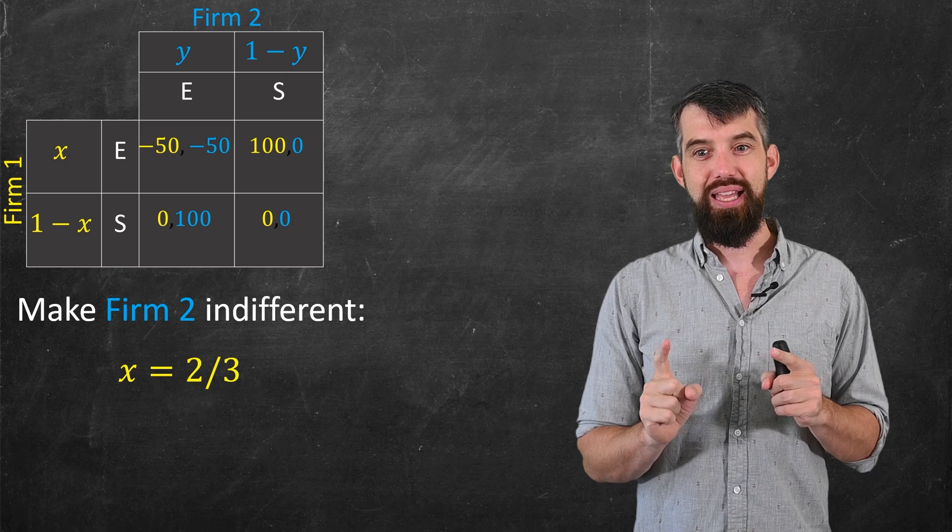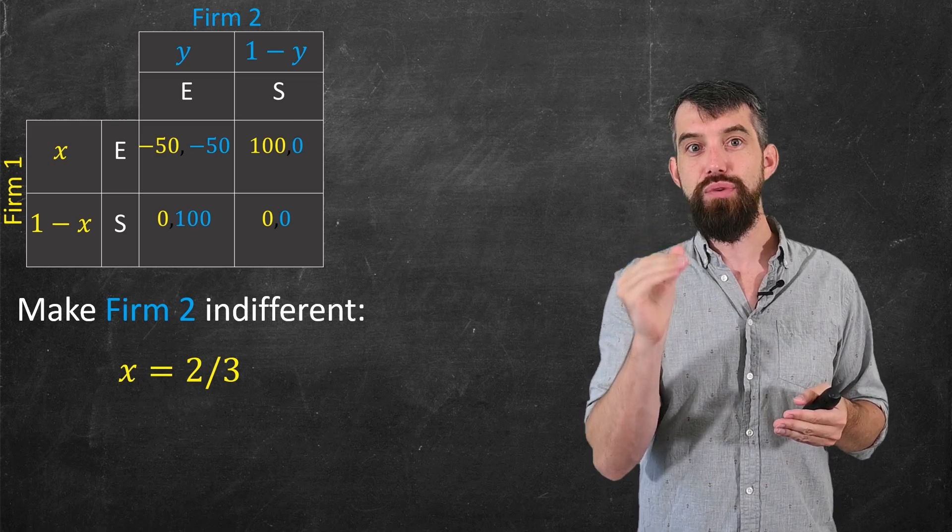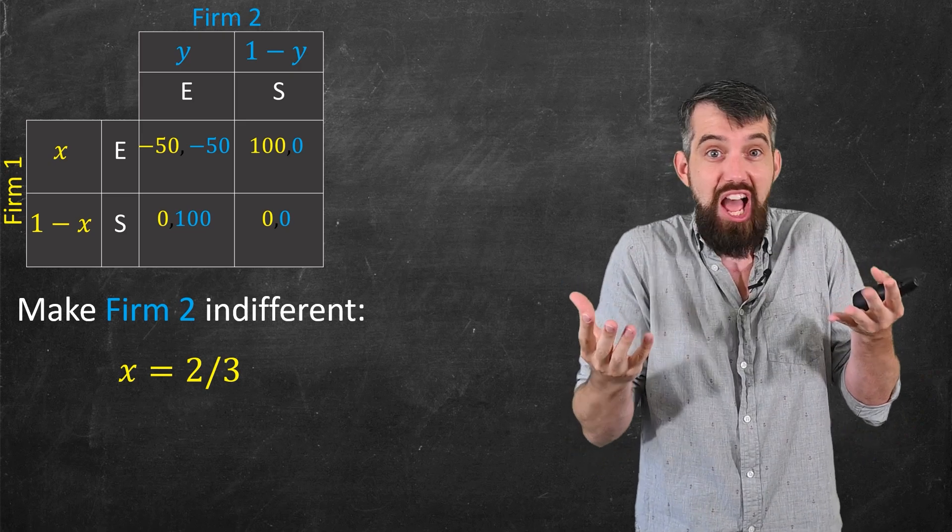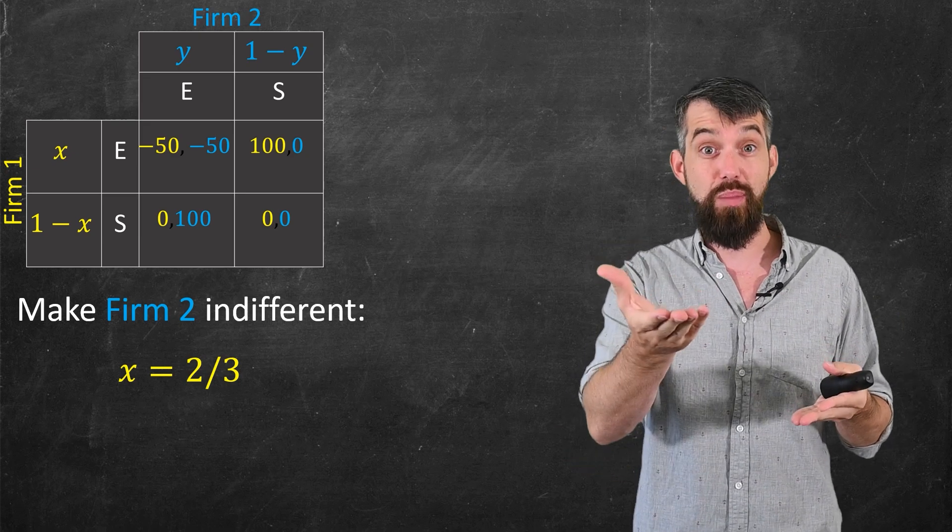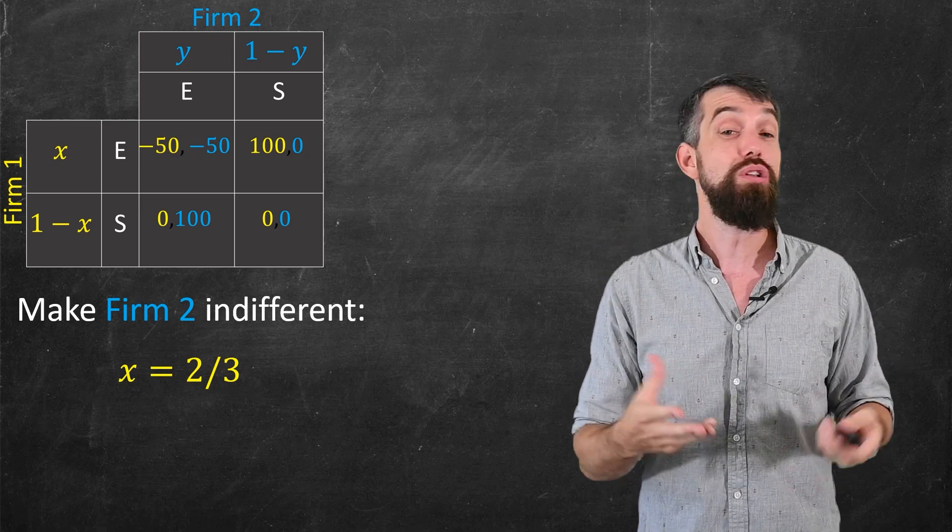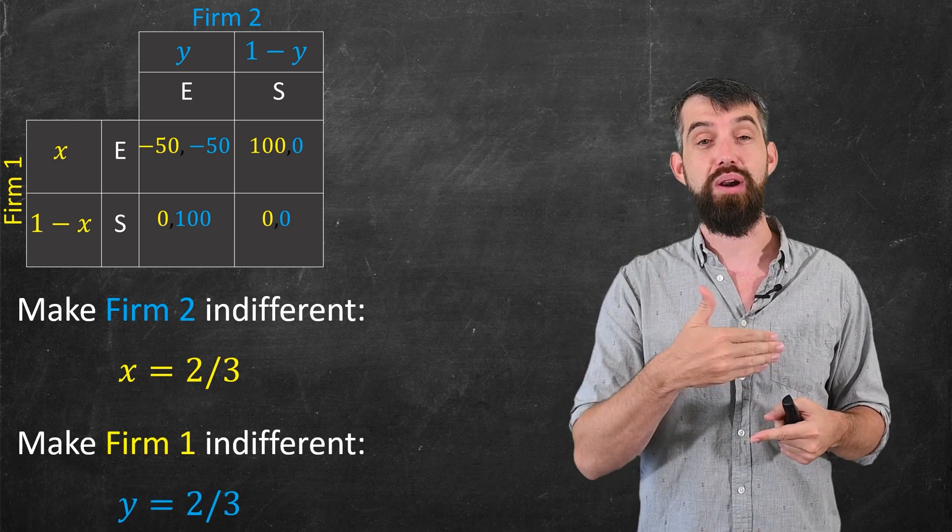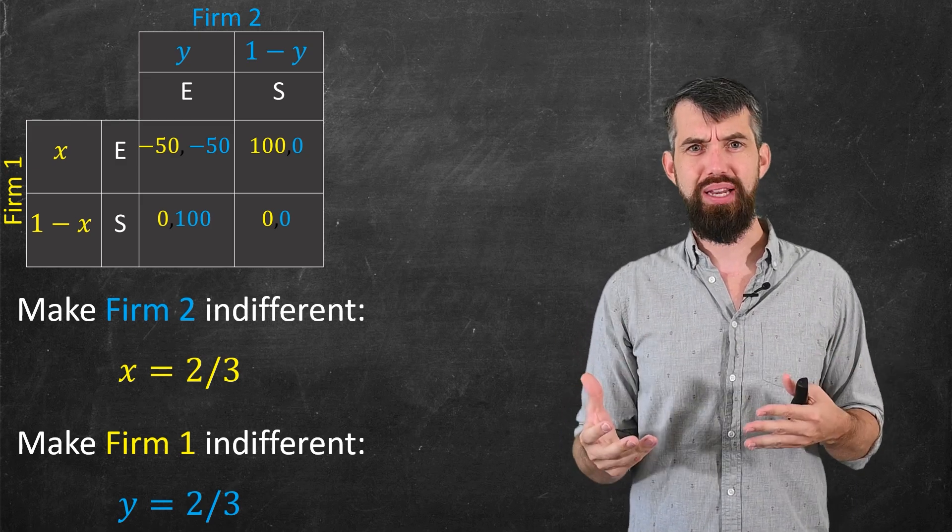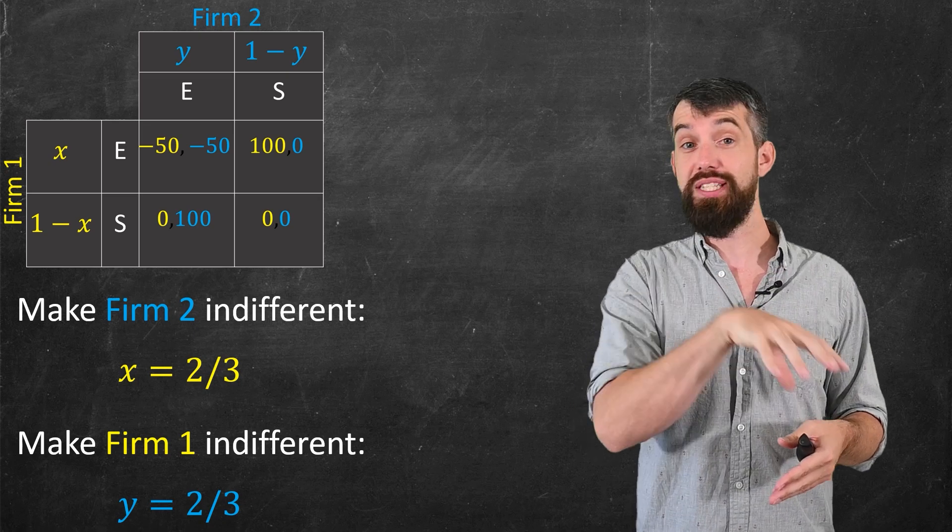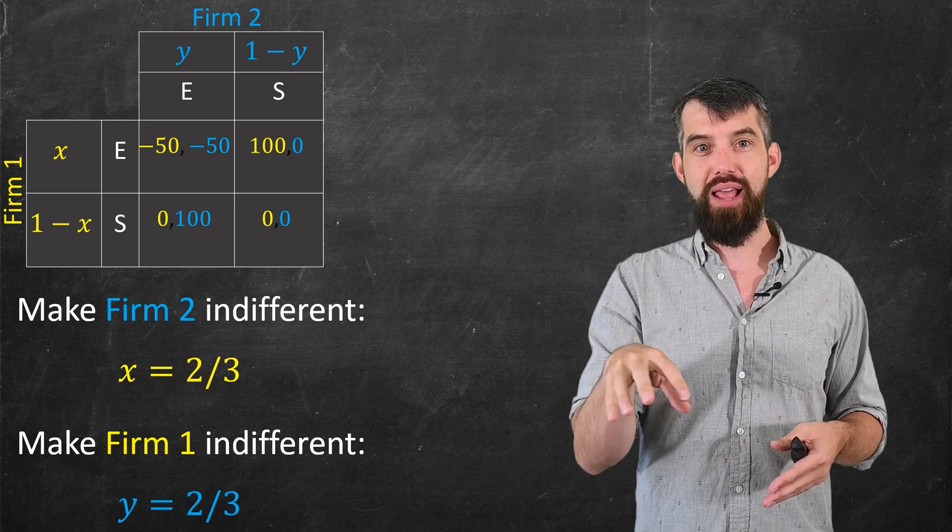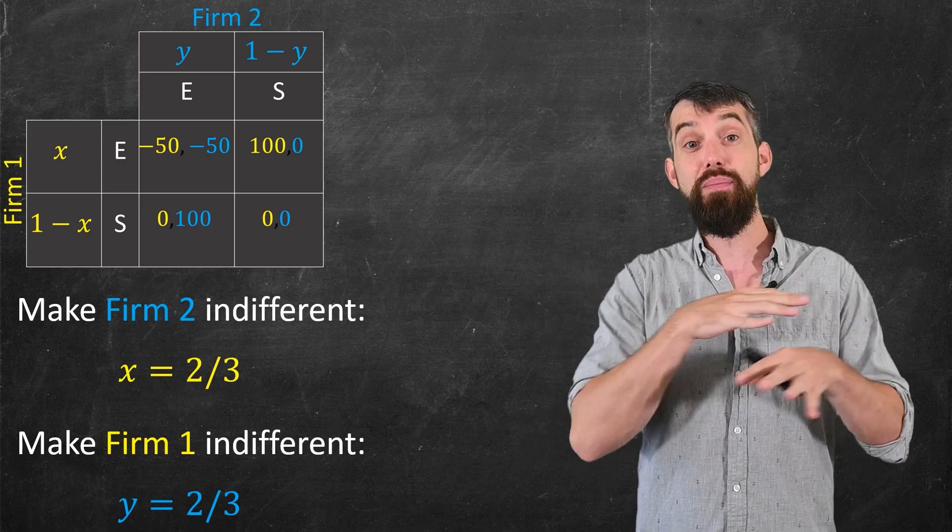So what this means is that firm 1 should try and enter the market two-thirds of the time. If they do that, if they enter two-thirds of the time, then firm 2 isn't different. They're like, I could stay out, I could enter. It doesn't make any difference. Either way, my expectation will be exactly the same. The expectation of staying out of the market is 0, so either way, their expectation is 0. You can do the exact analogous computation, I'll let you do it, and see that firm 1 isn't different if firm 2 decides to enter the market two-thirds of the time. And you can sort of imagine how a two-thirds probability might actually happen. For example, you can imagine a firm that's trying to expand around the United States, and they're looking at all the different states that they can go in and try to enter and compete in all those individual states, and they might end up saying, well look, I'm going to do about two-thirds of the time I'm going to enter them, one-third of the time I'm going to not. And that's going to maintain this Nash equilibrium.